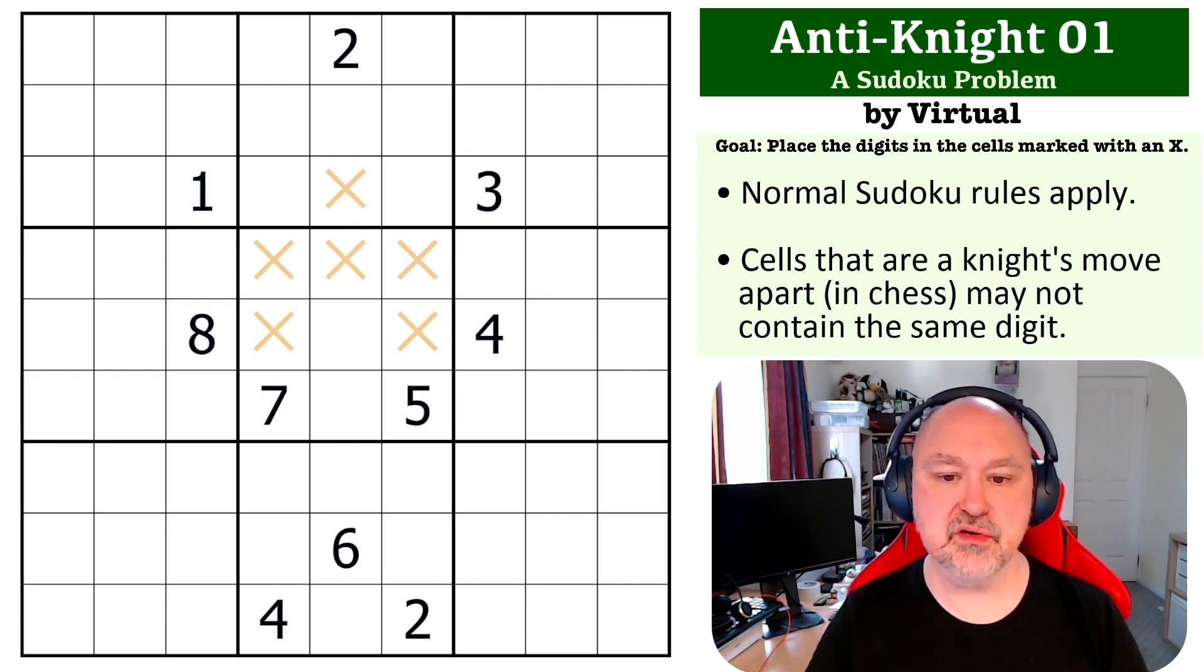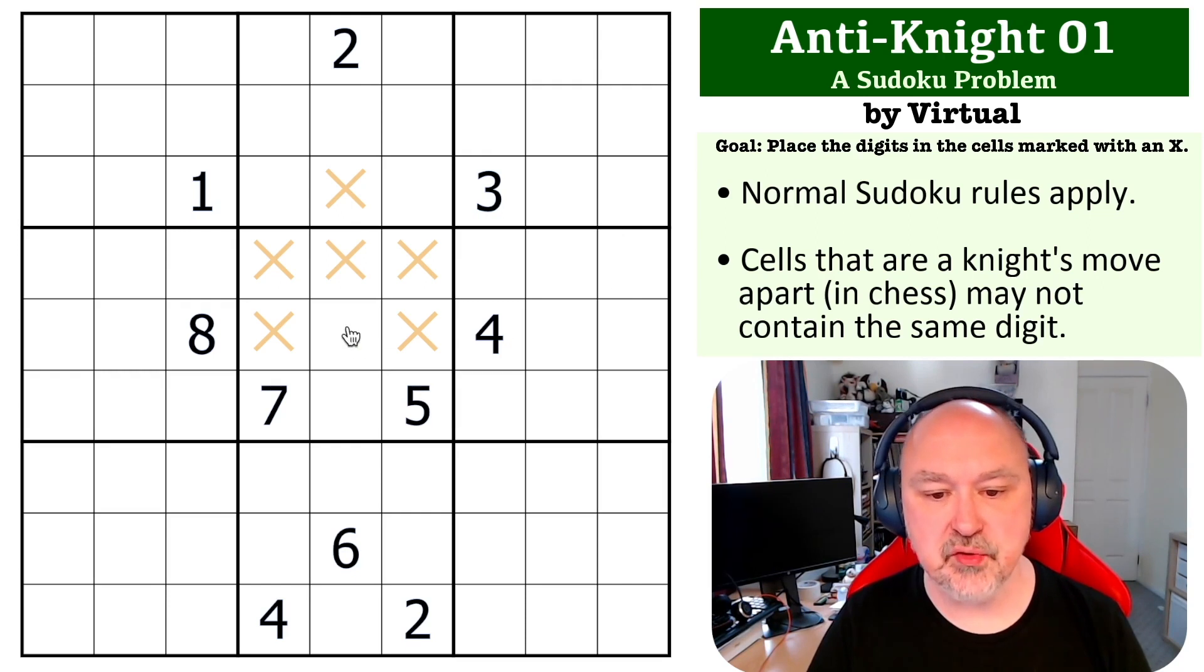So if you were to think about a knight's move, I'm going to pick on this central cell, and I was to say that this digit was, we were to say, where could this not repeat?